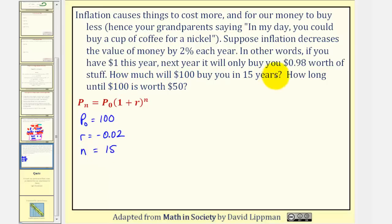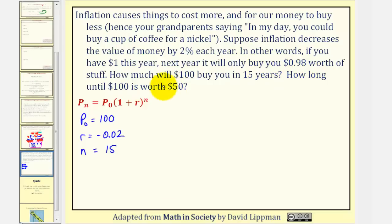So to answer this first question, we won't need logarithms, but we will for the second part. To find the value of the $100 in 15 years, we want to find P(15). So P(15) would be equal to P₀, or 100, times 1 plus r, which is negative 0.02, raised to the power of n, and n is 15.